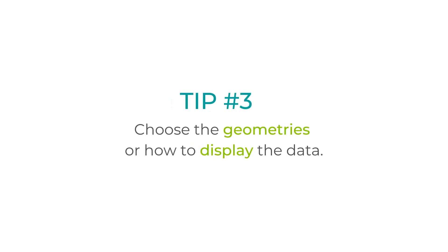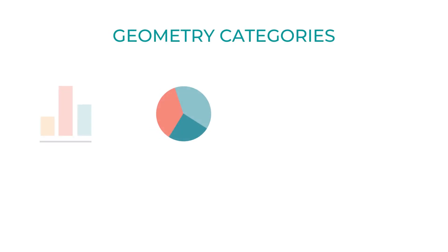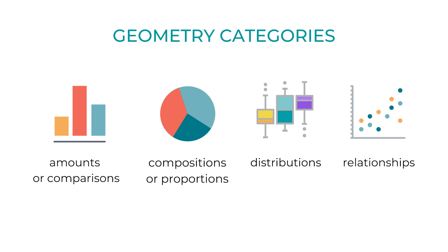The final four tips are related to design choices made when creating data visualization. After deciding on your visualization goal and understanding the limitations of your data, the next step is to choose the geometries and how to display the data for the audience. Geometries are the defining features or shapes in the data visualization, like bars in a bar chart. The type of data will influence the chosen geometry. Most geometries are separated into one or more of the following categories: amounts and comparisons, composition or proportion, and distribution and relationship.